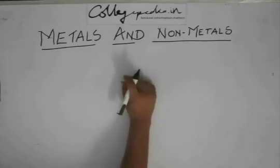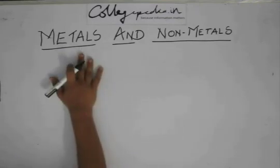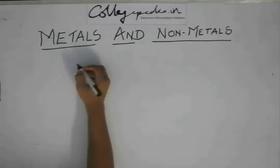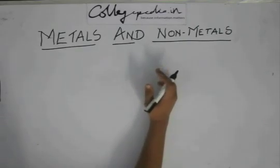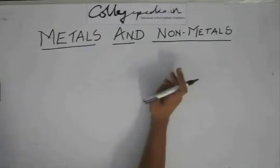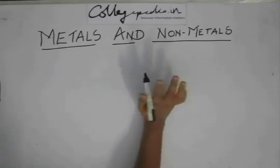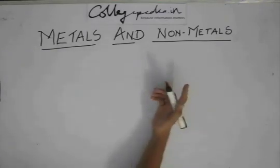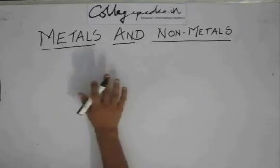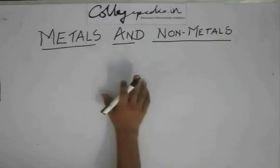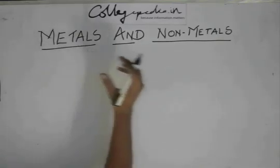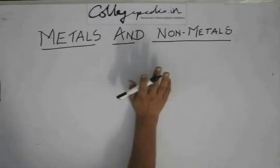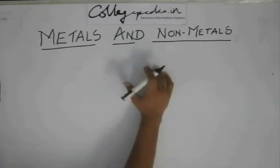We don't have a specific definition for metals or non-metals. You might have heard definitions like metals are substances which give electrons to become positive ions, and non-metals are substances which accept electrons to become negative ions. But that's not the true definition because there are many exceptions to that.